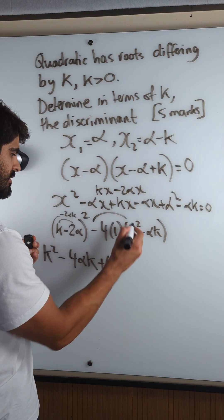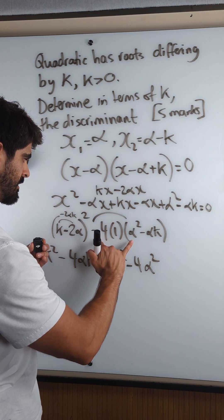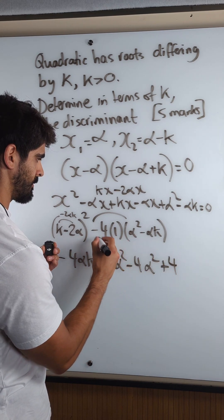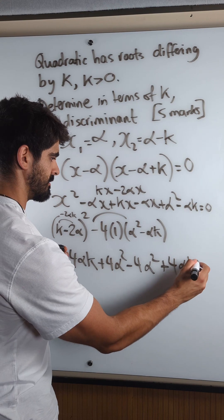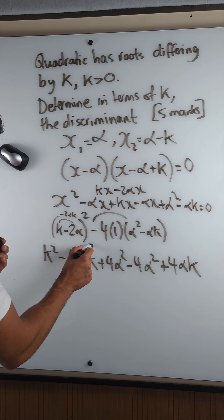Expanding this in, I get minus 4 alpha squared plus 4 alpha k. Oh, minus 4 alpha k.